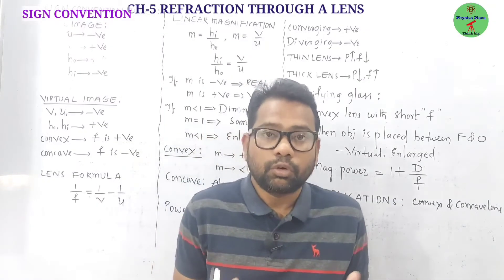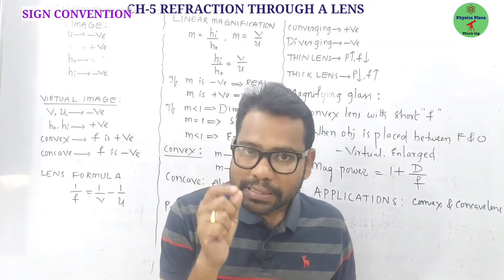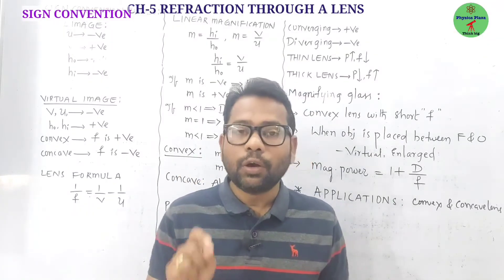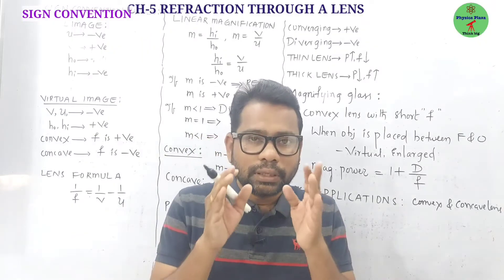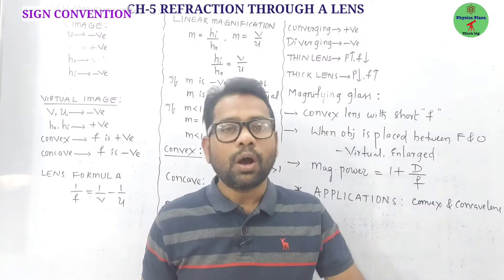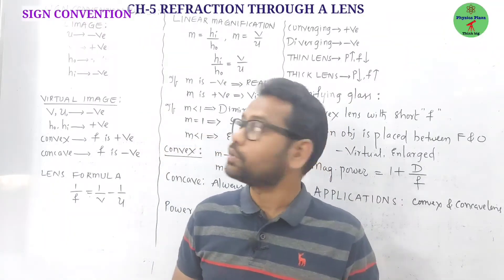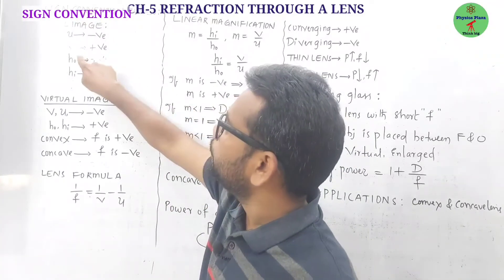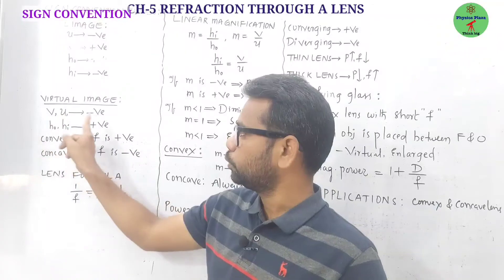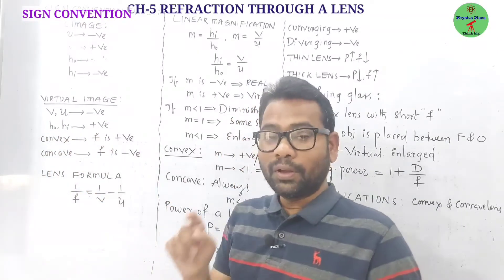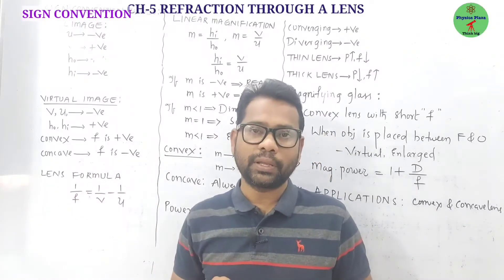According to the sign convention, the optic center is taken as the origin. All horizontal measurements are taken from the optic center. Distances in the direction of incident light are positive; opposite directions are negative. Measurements above the principal axis are positive and below are negative. For a real image, object distance is negative and image distance is positive. For a virtual image, both are negative. For a convex lens, focal length is always positive; for a concave lens, it is always negative.